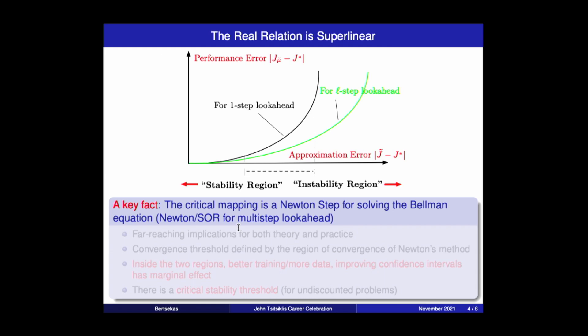And the critical fact is that the mapping that takes approximation error to performance error is a Newton step for solving the Bellman equation. In the case of multi-step look ahead, it's a Newton SOR step. SOR stands for successive over-relaxation. It involves a Newton step, but preceded by a number of first-order iterations. And that's what shifts the curve towards the right.